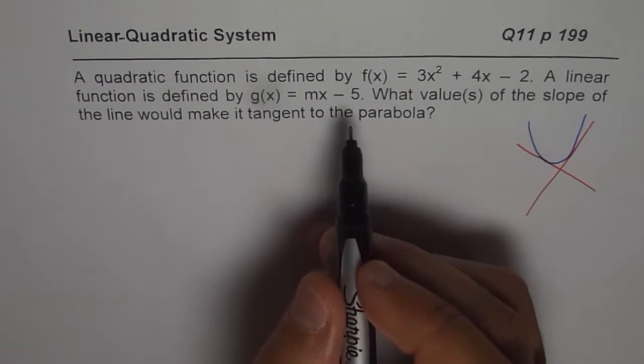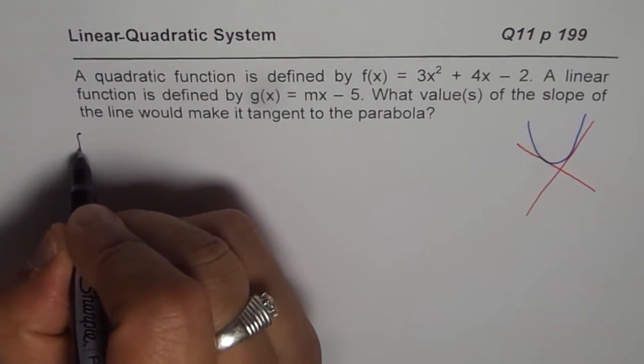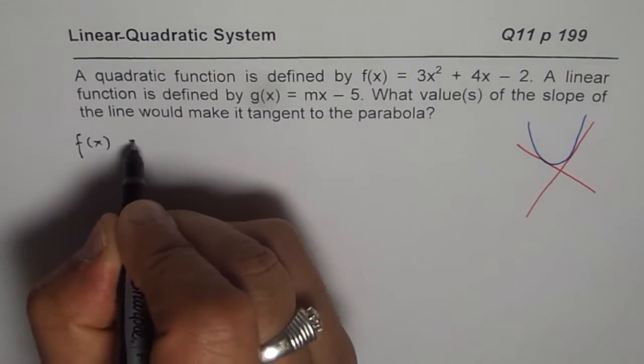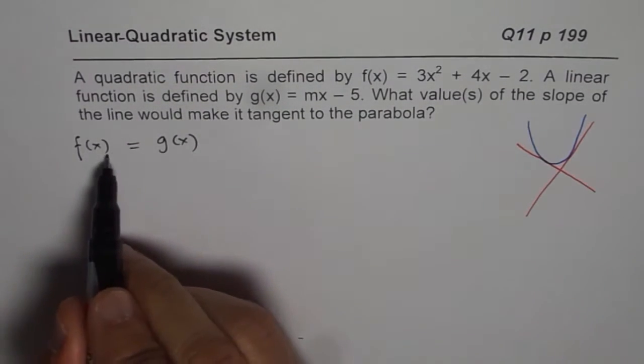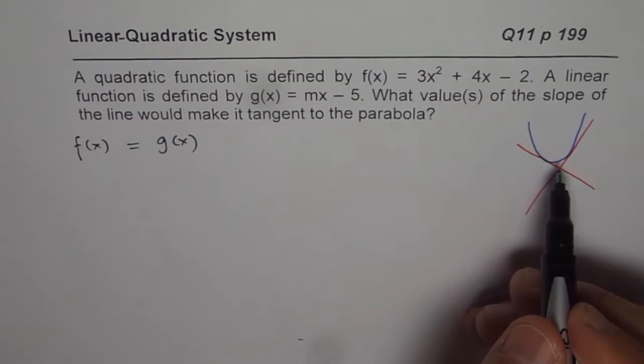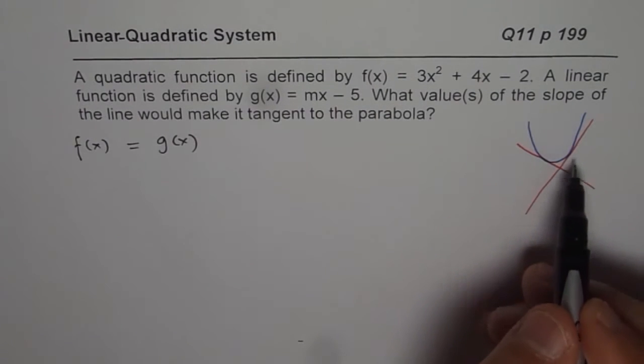So for that, what we will do is we will equate the two functions with equality. So g(x) over f(x). Now, if these two functions are equal, that means they are intersecting. A line intersecting a parabola.